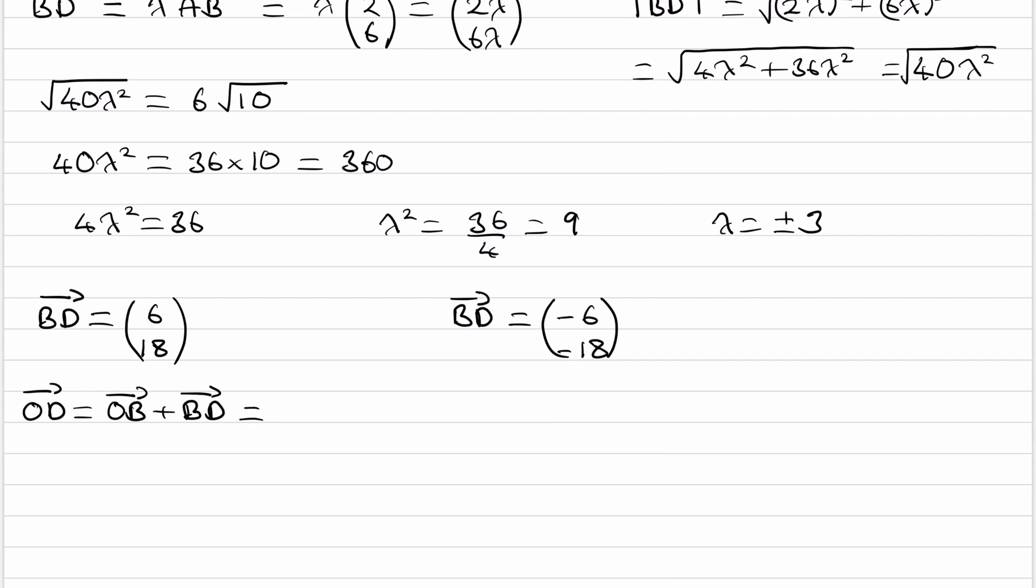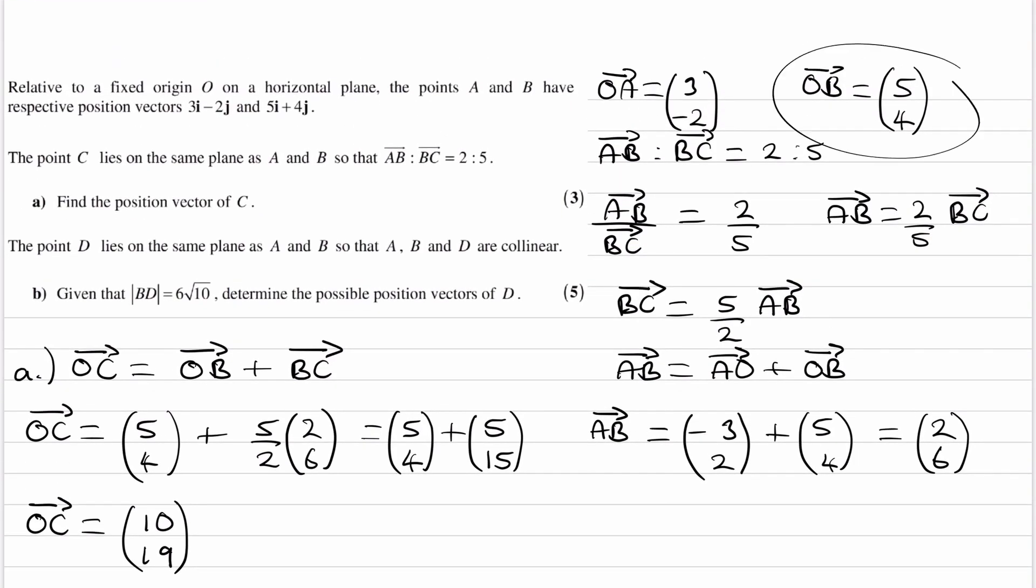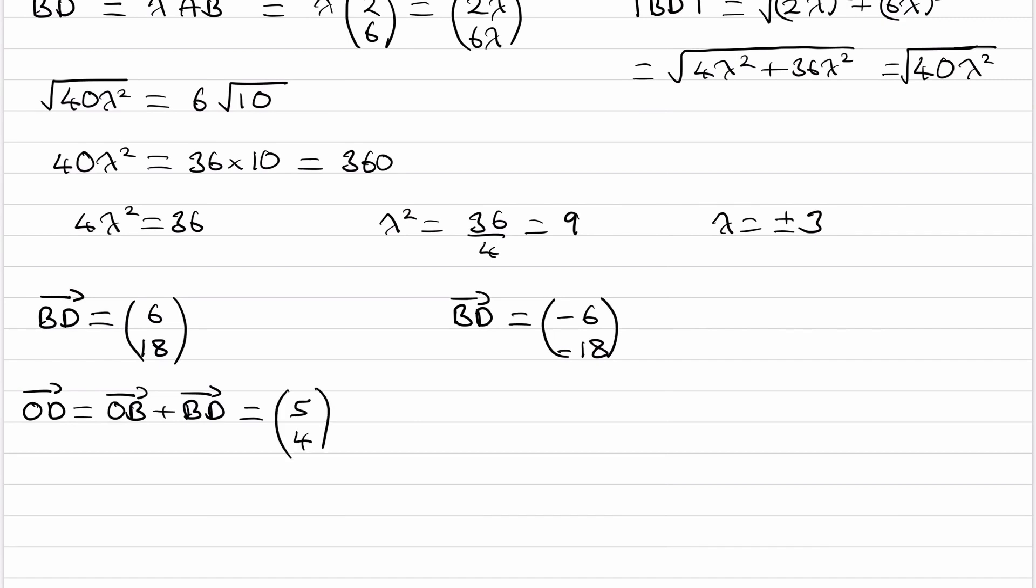This is the same thing as, so OB was (5, 4). So this is then (5, 4) plus either (6, 18), or it will be (5, 4) plus (-6, -18).